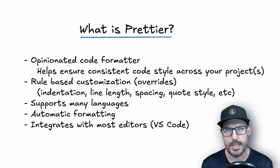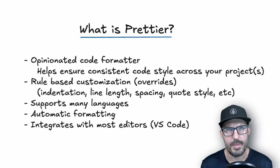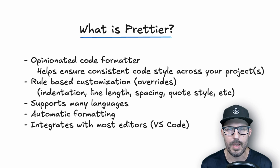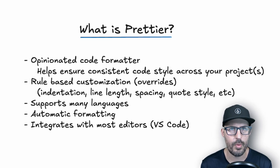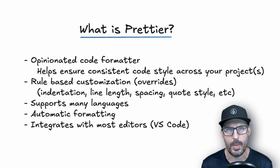Prettier supports many languages. So whether you're using JavaScript, HTML, CSS, JSON — there are a few others which you can check out on the Prettier documentation, but it's mostly scoped to web development type languages and frameworks. The biggest benefit of Prettier is actually its automatic formatting capabilities, which we're going to see once we install the Prettier extension for Visual Studio Code. You can also format through the command line, but you'll soon see that using Visual Studio Code with the Prettier extension is going to be the way to go.